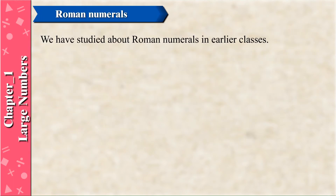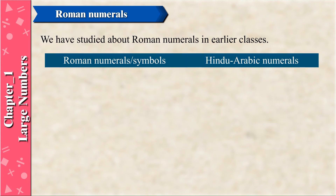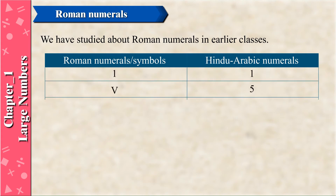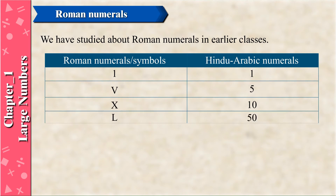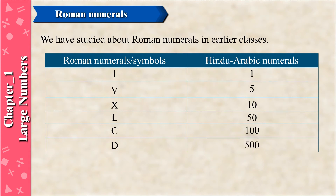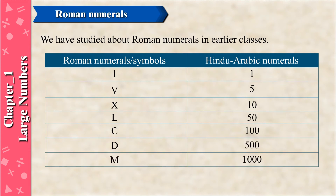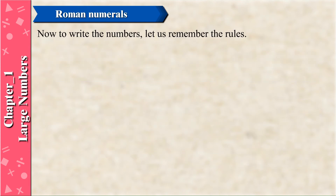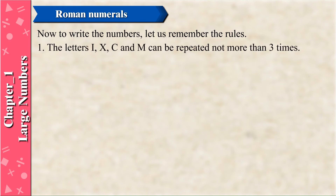Roman numerals. We have studied about Roman numerals in earlier classes. Roman numeral symbols and their Hindu-Arabic equivalents: I = 1, V = 5, X = 10, L = 50, C = 100, D = 500, M = 1000. Now, to write the numbers, let us remember the rules. The letters I, X, C, and M can be repeated not more than three times.